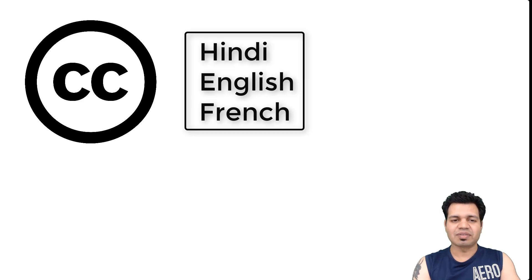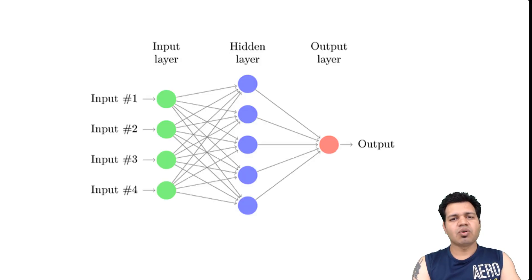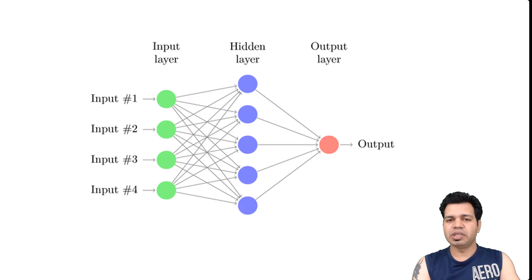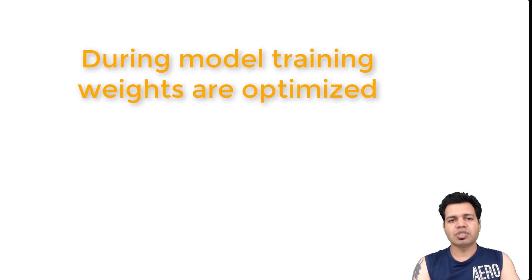In the previous videos, I explained the simple architecture of an artificial neural network, but that was just an architecture. In real applications, we need to develop and train these neural networks on large datasets — be it image, text, or time series data. During model training, we try to optimize the weights in the model.